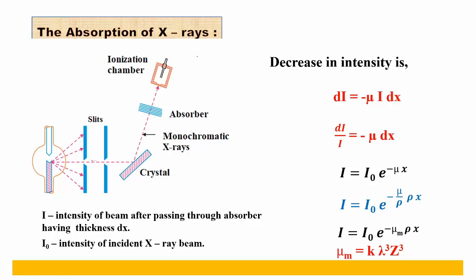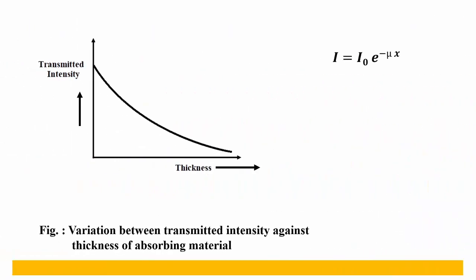From this theoretical equation, we can see that the mass absorption coefficient μ_m varies as the cube of the incident wavelength and also as the cube of the atomic number of the absorber. If we plot a graph of thickness of the material against transmitted intensity, the graph shows an exponential decay, consistent with the equation I = I₀ e^(−μx), indicating that as the thickness of the material increases, the transmitted intensity of the x-rays decreases.